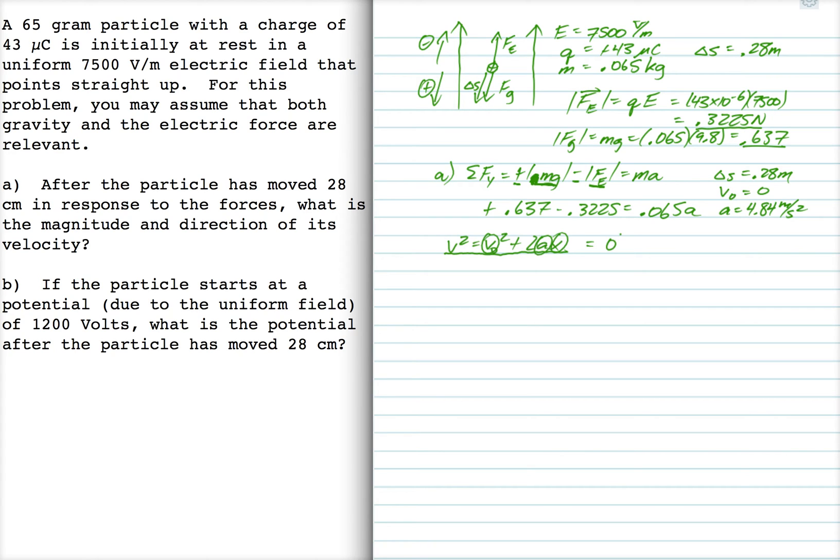And so when I solve for this, I get V squared is equal to 0 squared plus 2A delta S. So V is 1.6 meters per second directed downward. Positive 1.6.